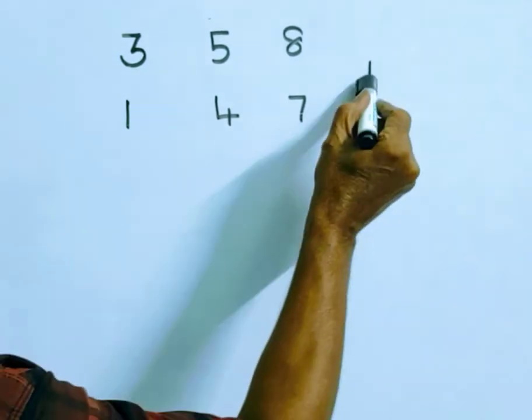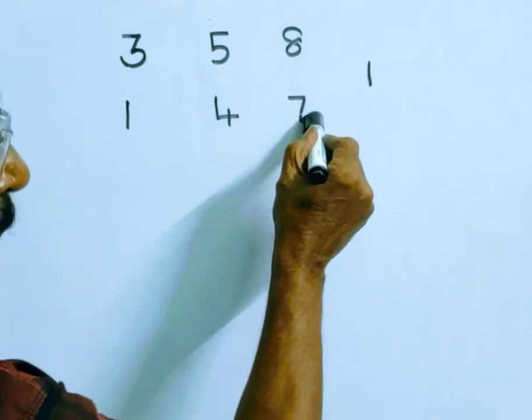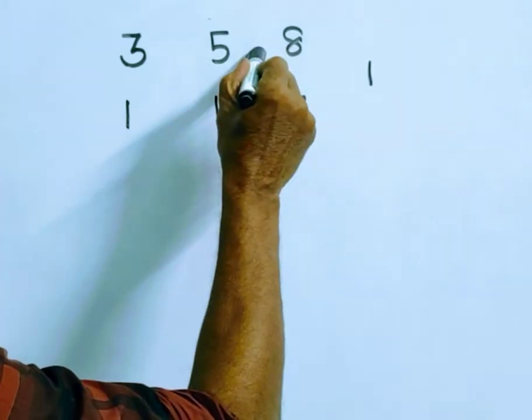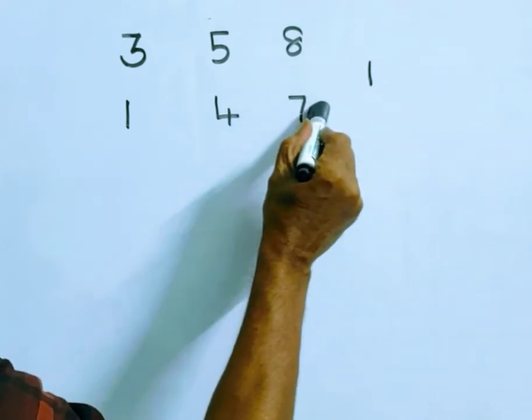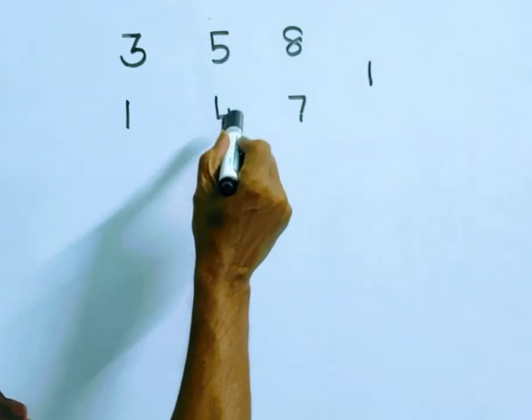1 into 8 plus 7. 1 into 8 is 8, 8 plus 7 is 15. Now 15 into 5 plus 4. 15 into 5 is 75, 75 plus 4 is 79.